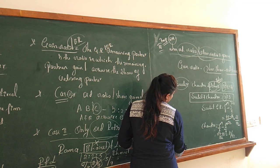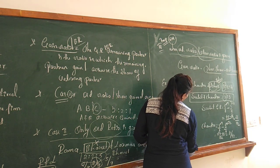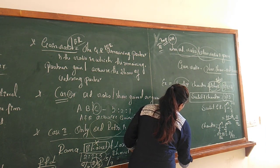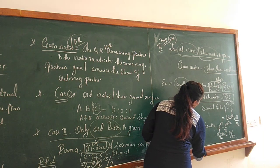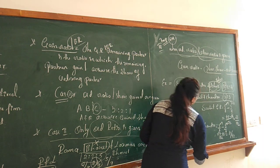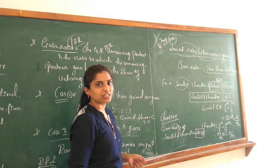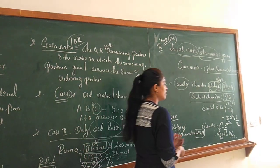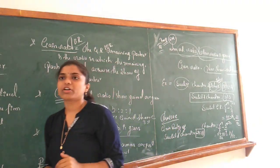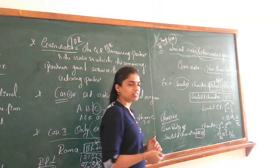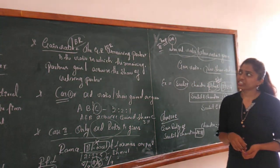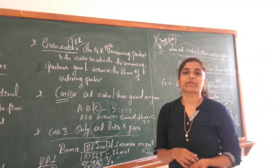Therefore, the gain ratio of Suchi and Chandru is 21:11. This is the answer for Case 3, where both the old ratio and new ratio are given. The gain ratio is also called the benefit ratio. The gain ratio relates to the remaining or existing partners when a retiring partner exits the firm.